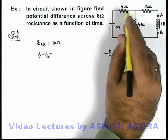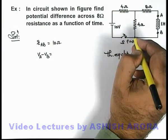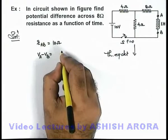And that current will be 10 by 8 ampere and the potential difference across AB is that across this 4 ohm resistance. So here it can be written as 10 by 8 into 4, that can be taken as 5 volt.